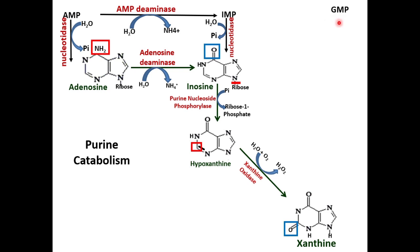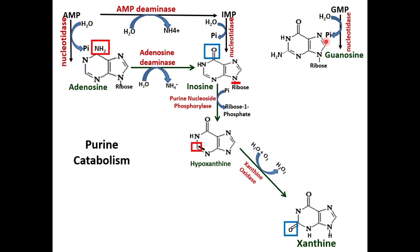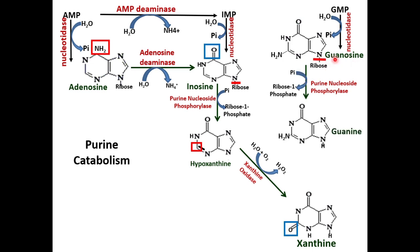Now let's look at GMP. Similar to AMP and IMP, GMP with the enzyme nucleotidase removes a phosphate molecule and forms guanosine. Guanosine, similar to inosine, is acted upon by the same enzyme Purine Nucleoside Phosphorylase, which removes the ribose as ribose-1-phosphate, forming guanine.